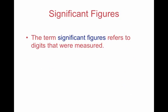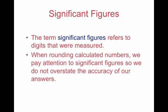Now, how do we determine how precise a measurement was? Well, we use the term called significant figures. In a measurement, it is useful to indicate the exactness of a measurement. The exactness is reflected in the number of significant figures. The term significant figures refers to the number of digits that were measured. When rounding calculated numbers, we pay attention to significant figures so we do not overstate the accuracy of our answers. Significant figures tell other scientists how good or how exact their measurements were or how exact their instruments were when they are studying the same types of systems.